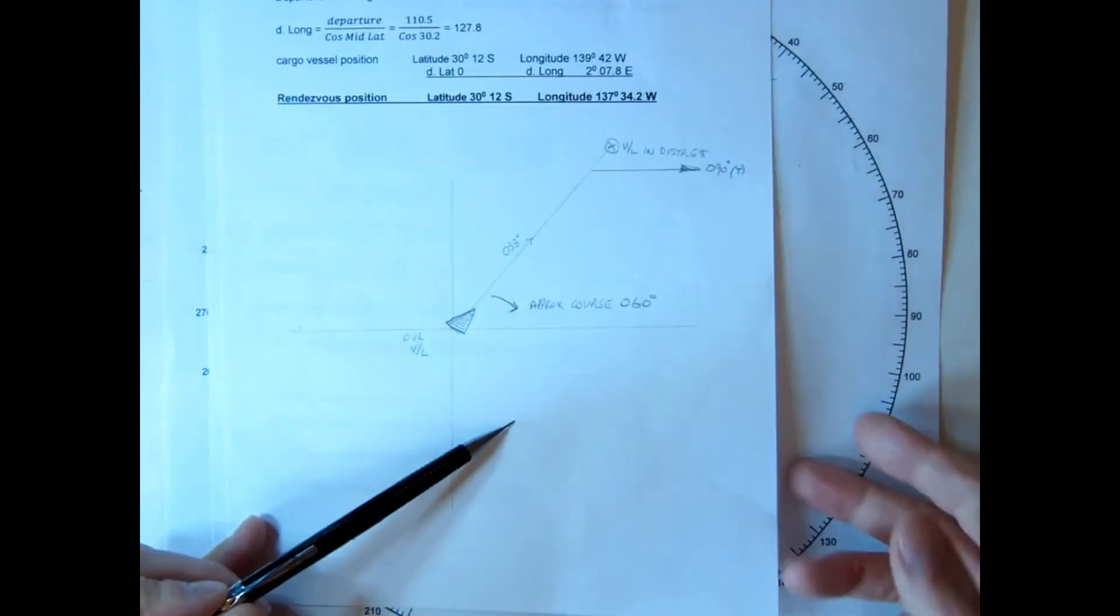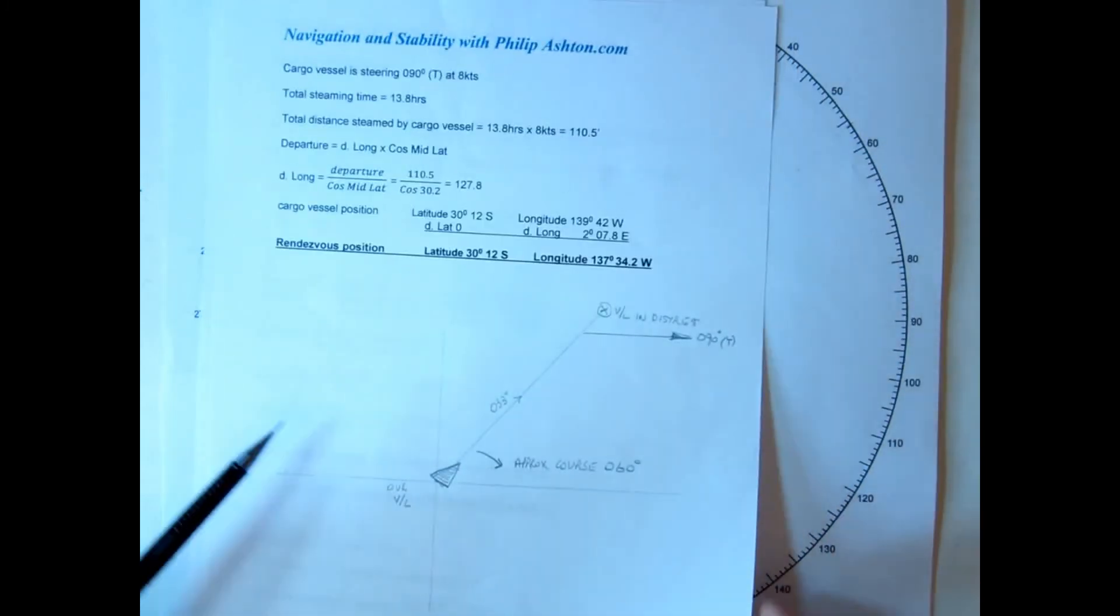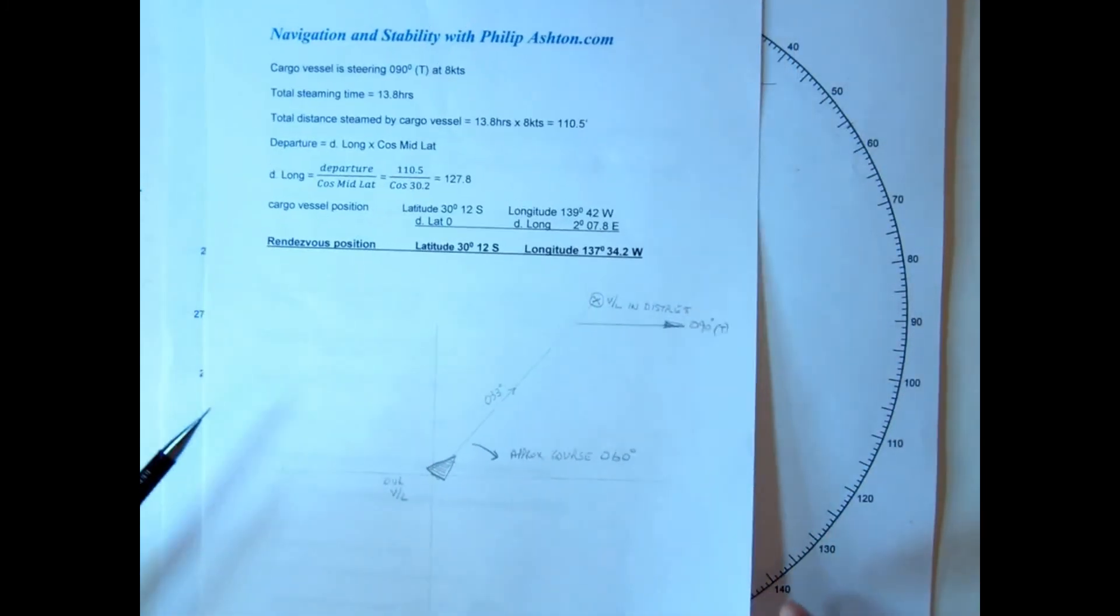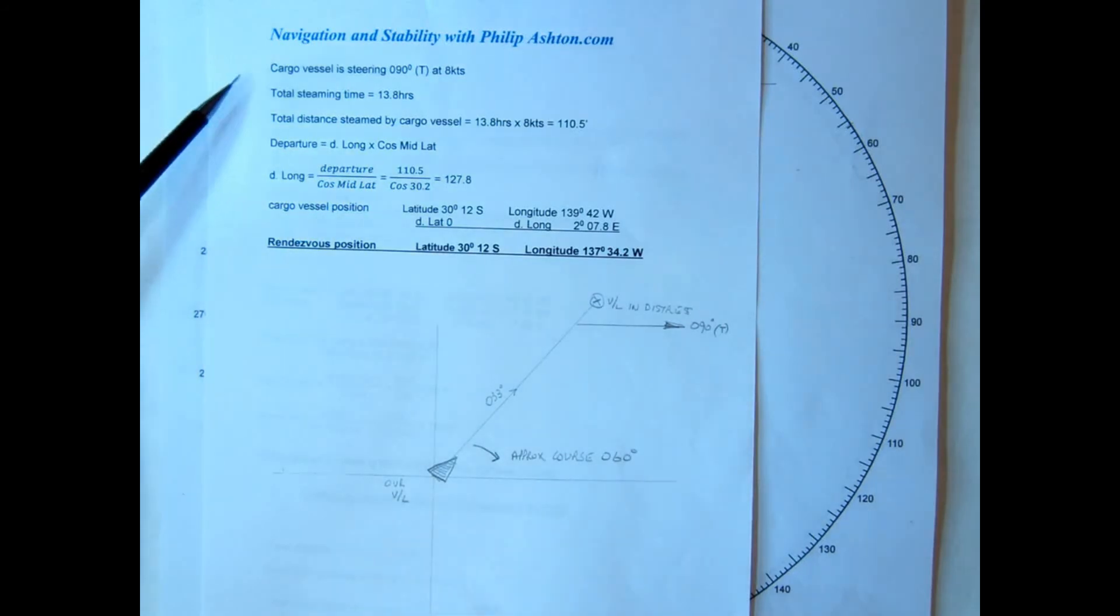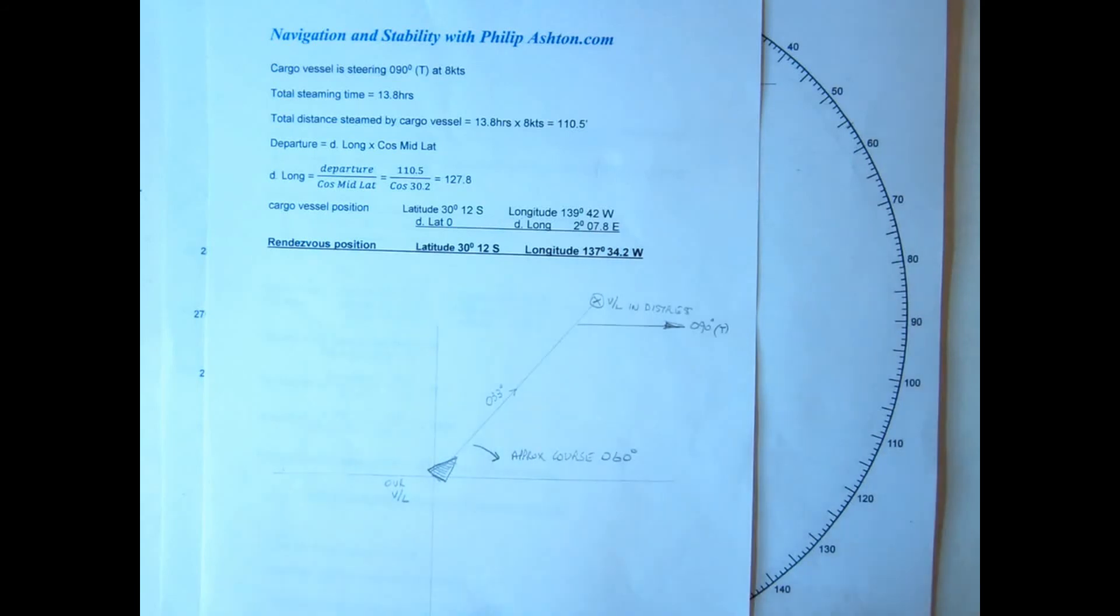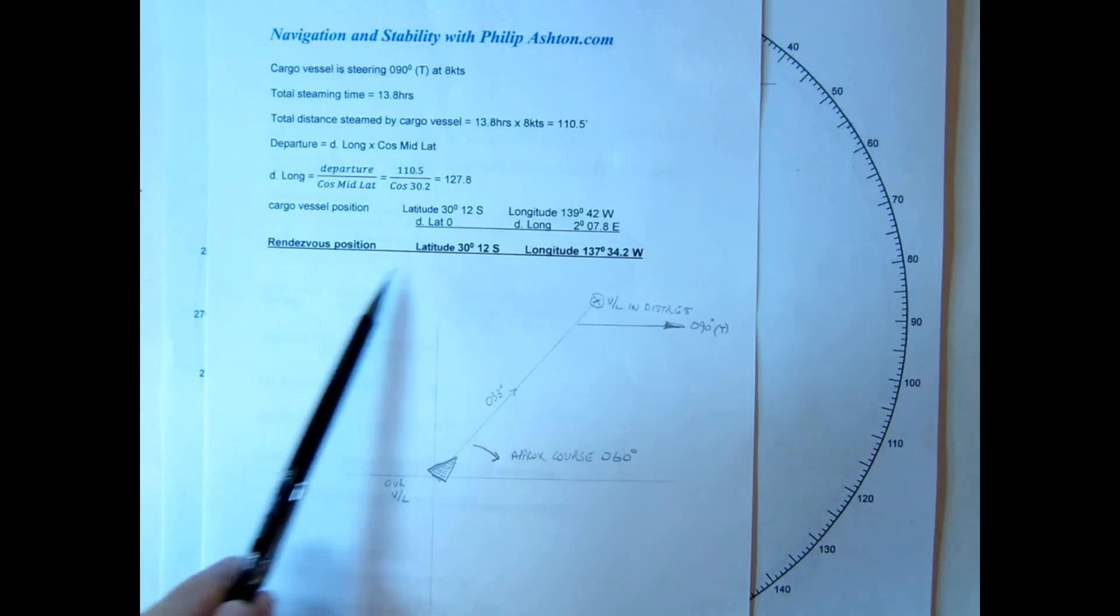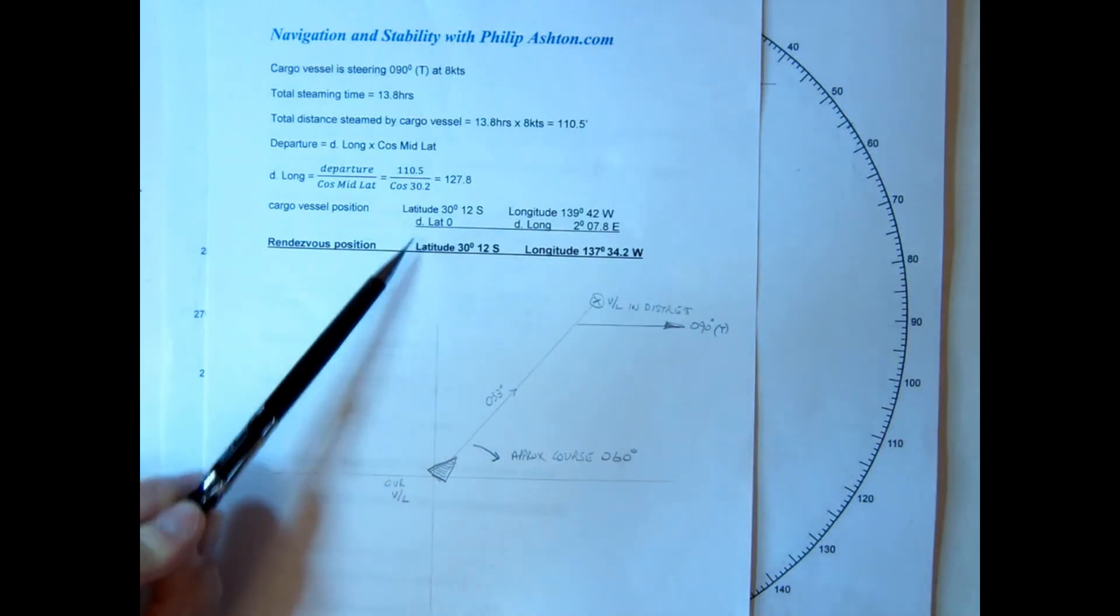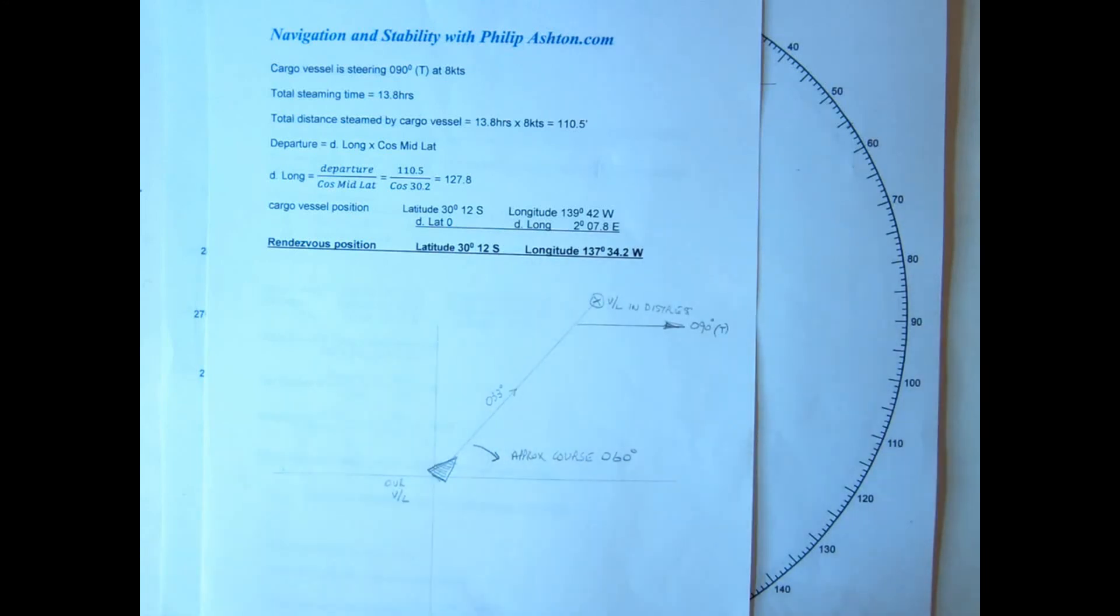So let's work out the rendezvous position. Now we would use the other vessel's course and speed, because we know that's a definite, you definitely know 090, eight knots. So do that for 13.8 hours. So we'll cover 110.5 miles. Then either Mercator or plane sailing, we can now work out the rendezvous position. Obviously, it'll be the same latitude, and it's just the longitude will change, decreasing as the vessel moves on a due east course. So that's how we would solve that.